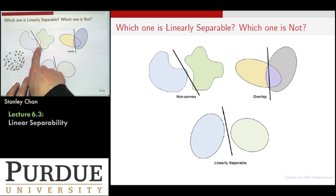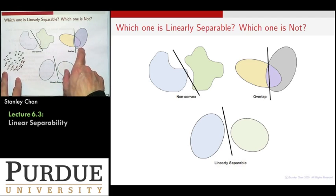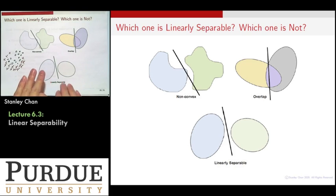This could be linearly not separable, but then it's just because of the non-convexity, not about the overlapping issue. So what we want to do is to introduce the notion of linearly separable. Linearly separable requires some conditions to make sure that it works.